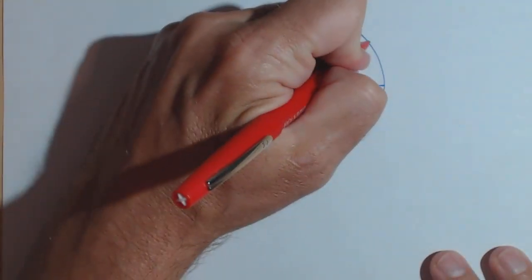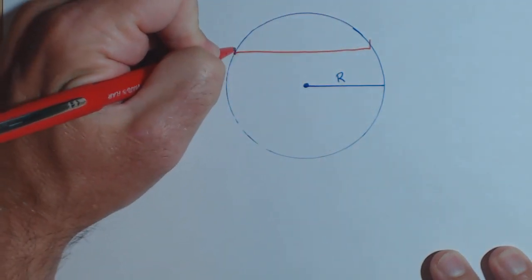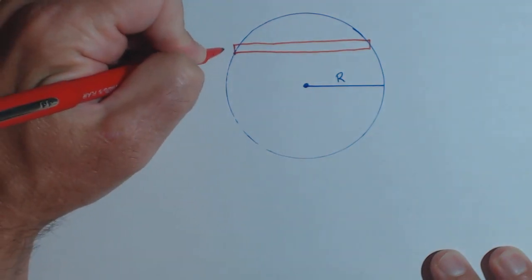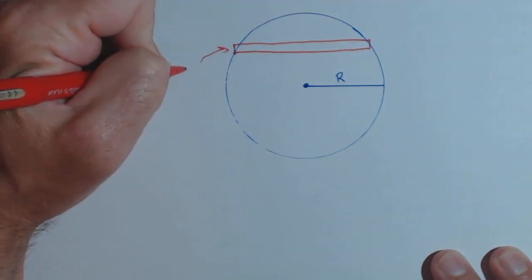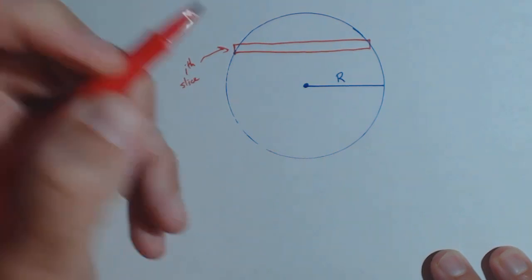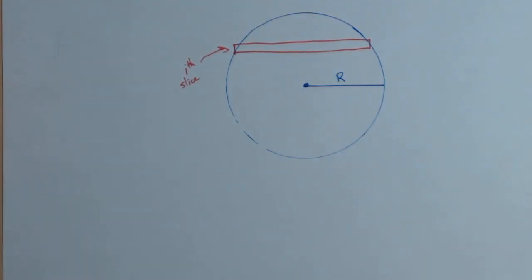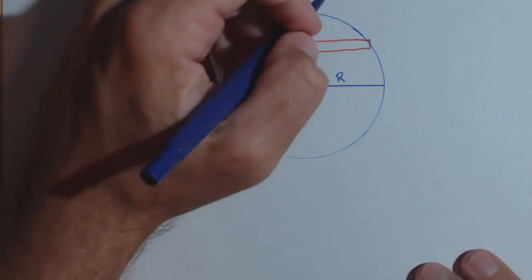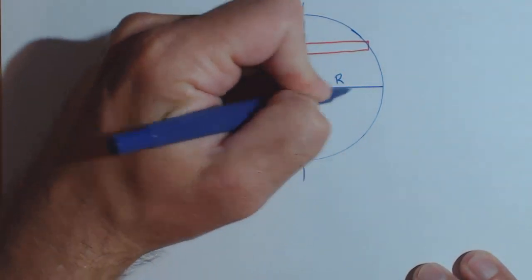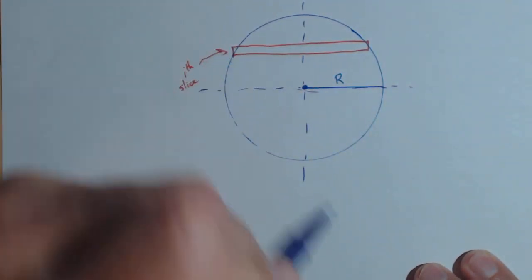The first thing we do is put in our ith slice. I'm going to do it horizontal — you could just as easily do it vertical. And right there is my ith slice. We can place the circle on an x and y axis with the center at the origin. You don't have to, but it can help with the labeling.